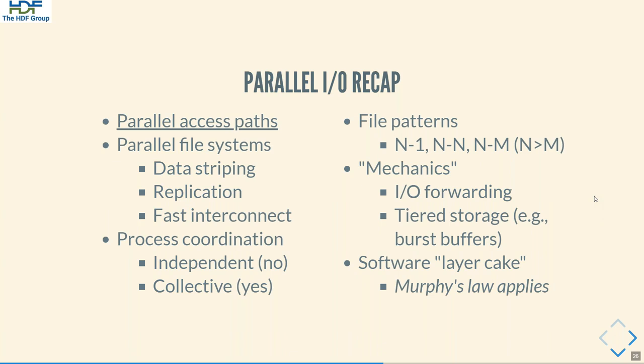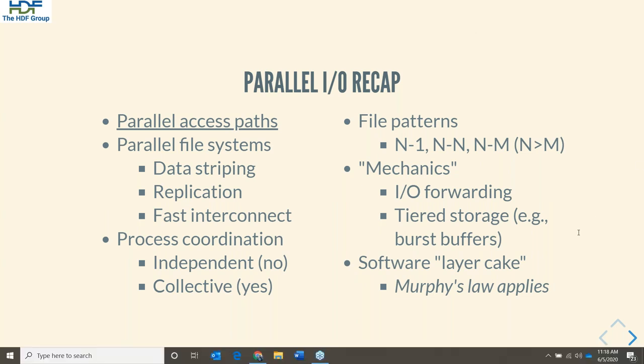I/O can be done in different process and file constellations: each process writing to a separate file, all processes writing to the same file, or some N-to-M mapping where the number of processes is typically greater than the number of files. And of course there is a lot going on under the covers — optimizations and techniques to cope with I/O workloads — plenty of room for optimization, but unfortunately also space for things to go wrong.